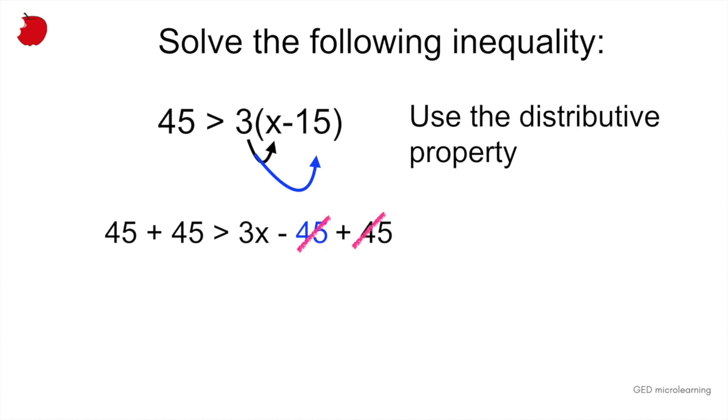And then 45 + 45 on the left side is 90 greater than 3x. Alright, and now the last step. How do we isolate that x? Well, if we divide that 3x by 3, 3x divided by 3 would give us 1. So that's a way to isolate it.